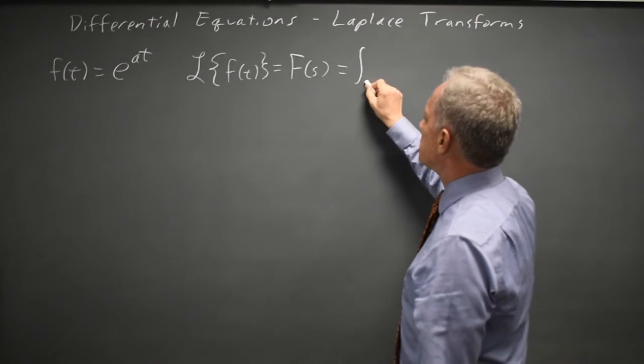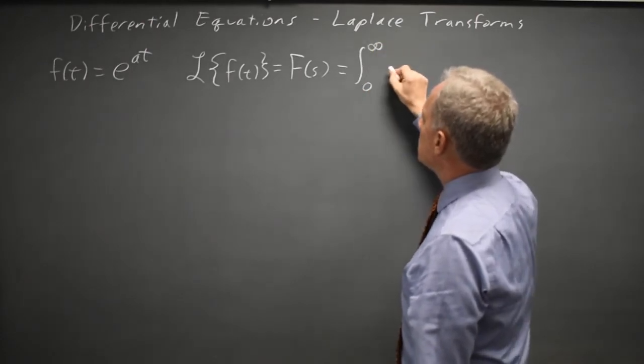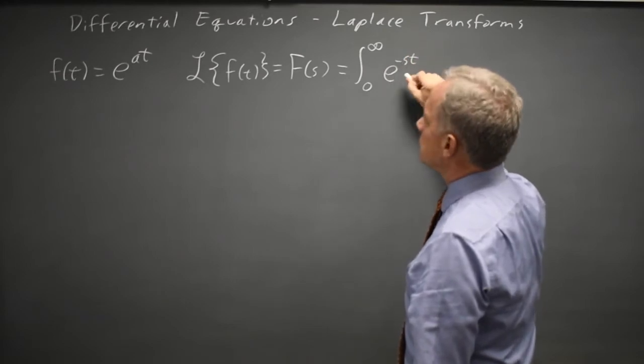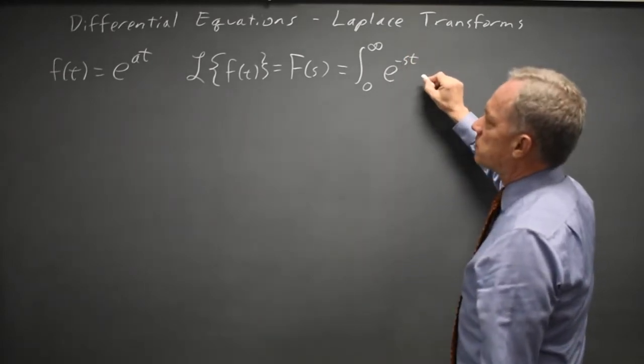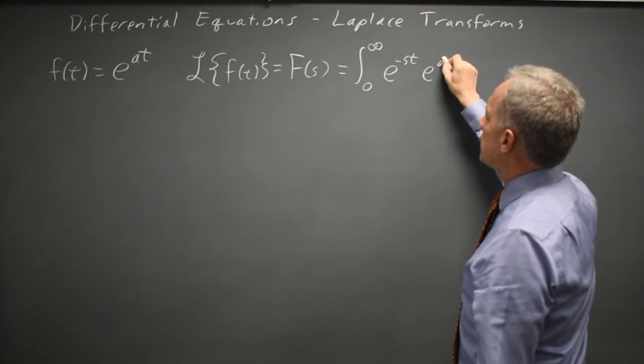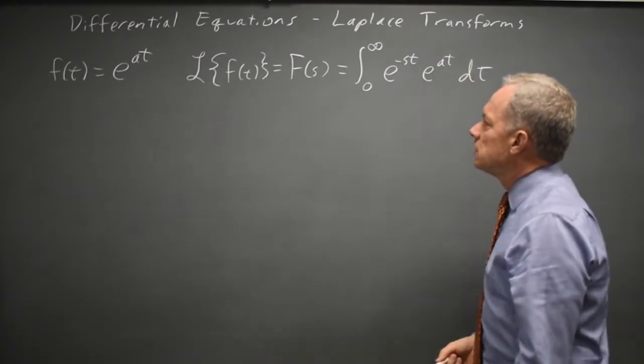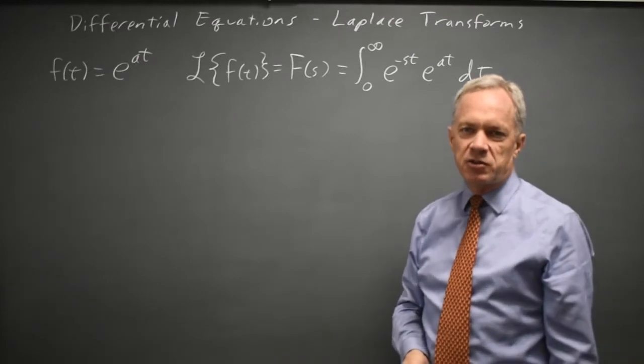For the Laplace transform, alpha is zero, beta is infinity, k of st is e to the negative st, and then times f of t is times e to the at dt. And this is the definition of the Laplace transform.